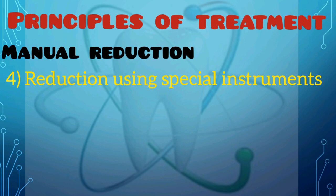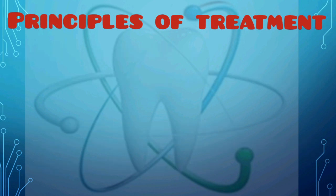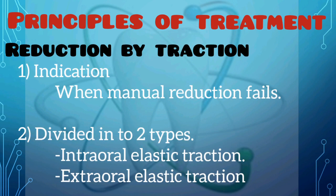The last manual reduction method is reduction by using special instruments such as the Rowe maxillary disimpaction forceps and Hayton-Williams forceps. The next method of reduction is reduction by traction, which is used when an attempted manual reduction has met with failure. This can be divided into two types: intraoral elastic traction and extraoral elastic traction with appropriate extension bars and side bars.